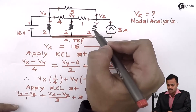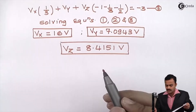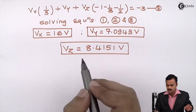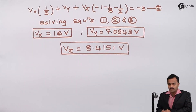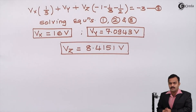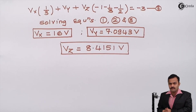We were asked to calculate the voltage of node Z, so Vz is our answer: 8.4151 volts. Here we have seen that we can apply nodal analysis to any complicated network having more than two nodes. In subsequent videos we will solve more numericals based on this. Thank you.